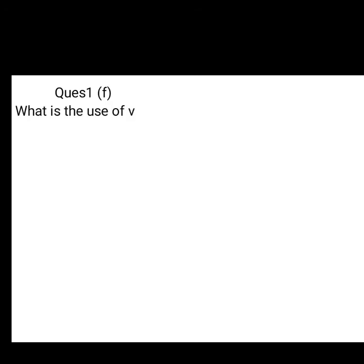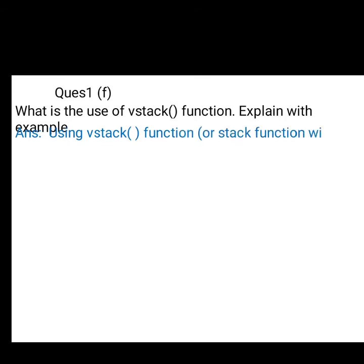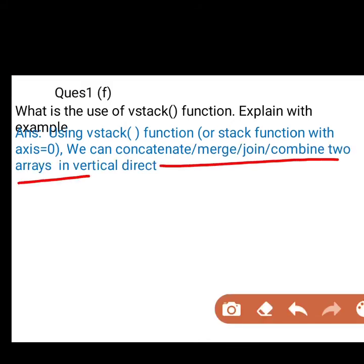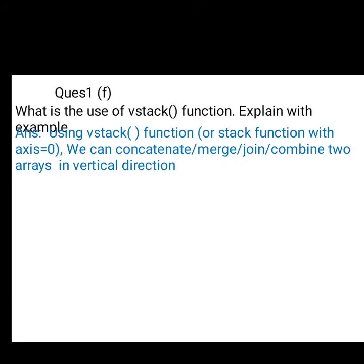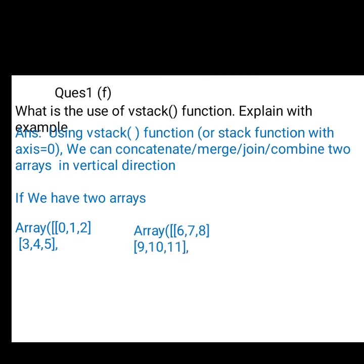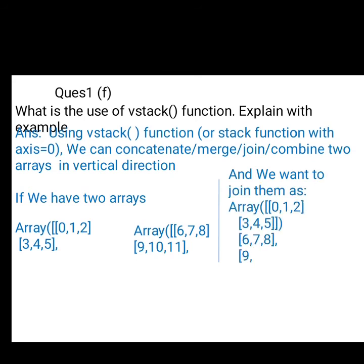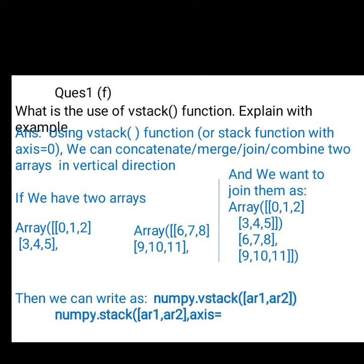Question first part f: What is the use of vstack function? Explain with example. Students, vstack function or stack function with axis equals 0 is used to concatenate or merge or join or combine two arrays in vertical direction. Suppose I am having one array having values 0, 1, 2, 3, 4, 5 and another array having value 6, 7, 8, 9, 10, 11, and suppose I want to merge it vertical direction and return the result as 0, 1, 2, 3, 4, 5, 6, 7, 8, 9, 10, 11, then I can use the stack function with axis equals 0 or vstack function to vertically combine them.